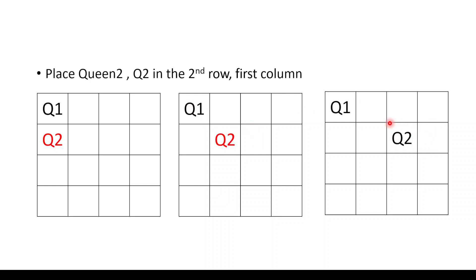With Q2 in the third column, no 2 queens are in the same row, no 2 are in the same column, and no 2 are on the same diagonal. So this is the valid position for Q2 in this tracing.